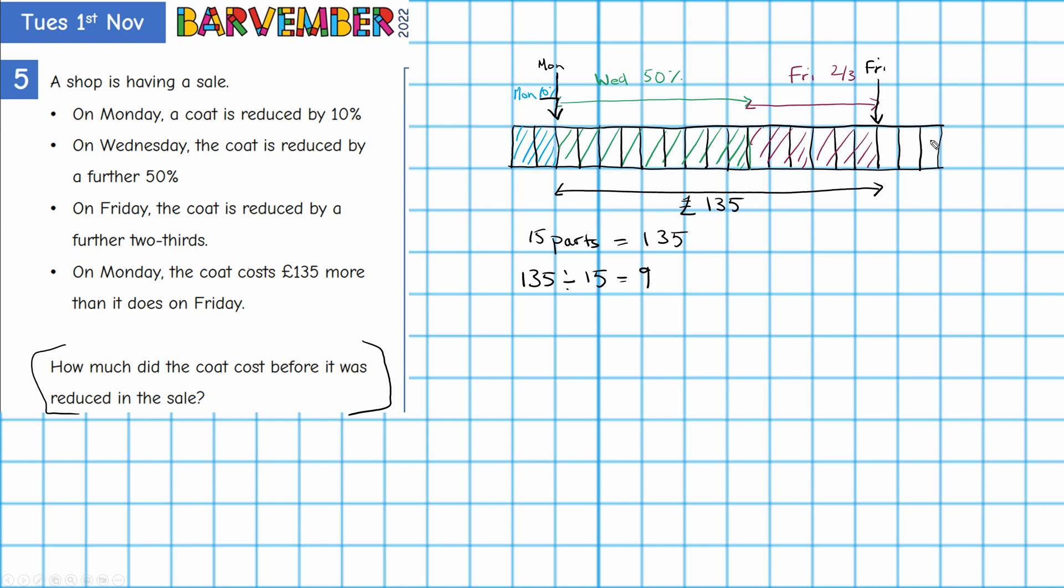So I now know that each of these parts has a value of £9. I'm writing it in on this one. I could write 9 in every one of these parts. I'm not going to but I could. Right, so let's see how this helps us solve our question and let's see where our question is. What I actually haven't done is mark in where the question is.